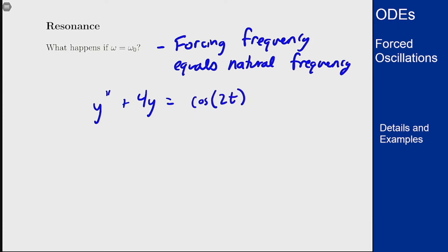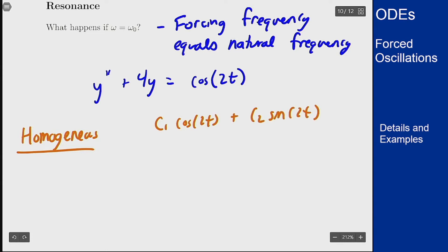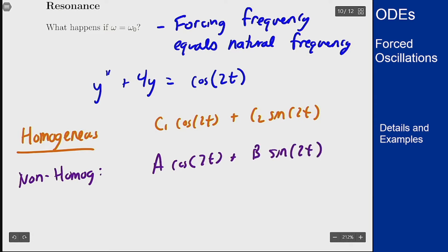So what's the issue? The issue is our homogeneous solution in this case will be c1·cos(2t) + c2·sin(2t), and then we go solve the non-homogeneous part. Our initial guess would be A·cos(2t) + B·sin(2t), and these are both problematic because this already solves the homogeneous problem. So we can't use this method here — undetermined coefficients doesn't just give us this solution.